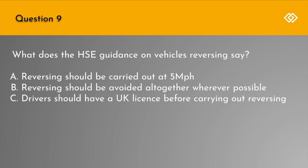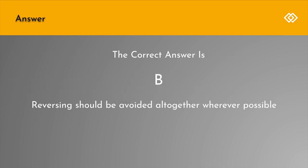Question 9. What does the HSE guidance on vehicles reversing say? A. Reversing should be carried out at 5 miles per hour. B. Reversing should be avoided altogether wherever possible. Or C. Drivers should have a UK licence before carrying out reversing. The correct answer is B: Reversing should be avoided altogether wherever possible.